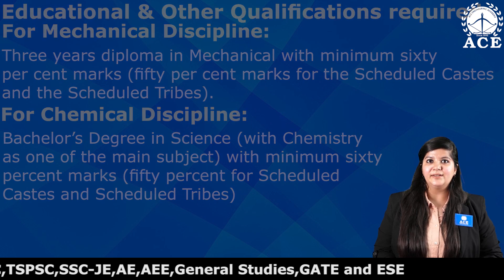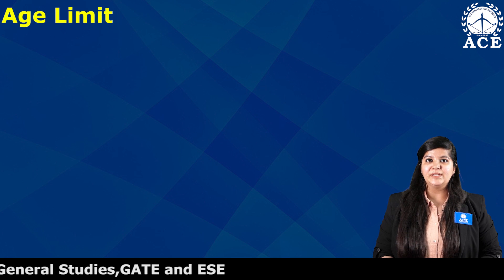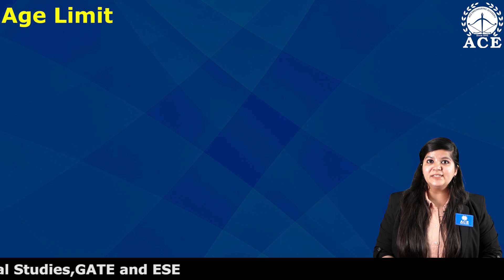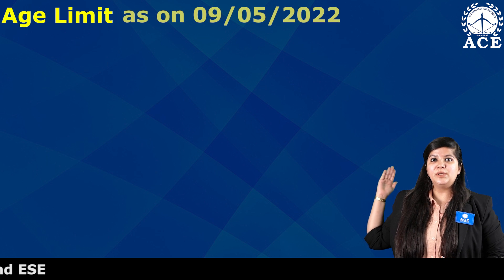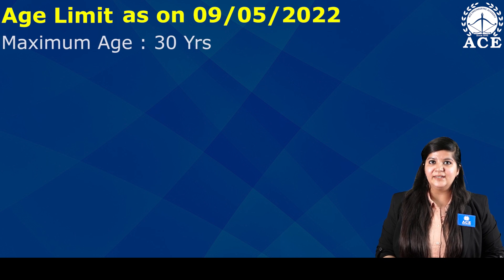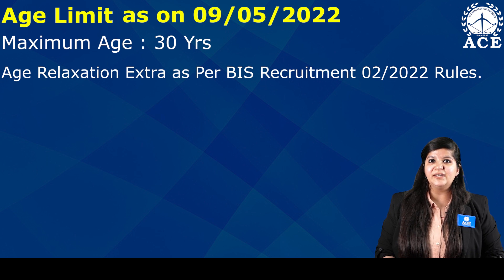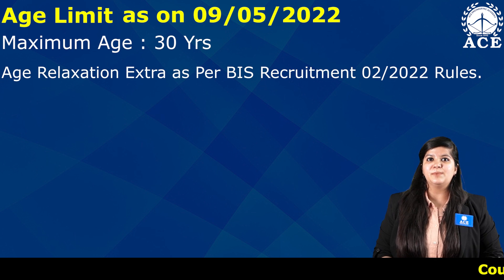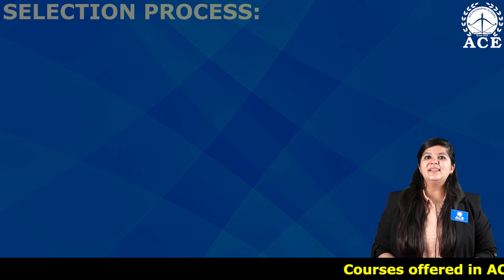For SC/ST category candidates in the chemical discipline, 50% marks are required. Now let us have a look at the upper age limit. The upper age limit will be calculated as on 9th May 2022, and it is 30 years. Age relaxations for reserved category candidates will be provided as per the norms.